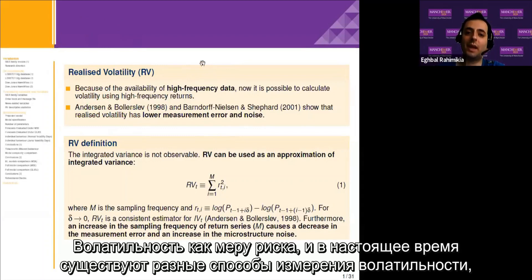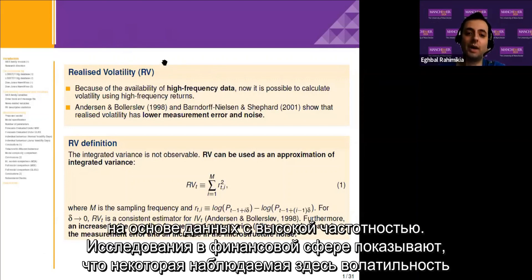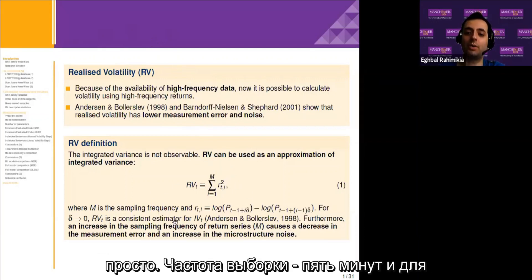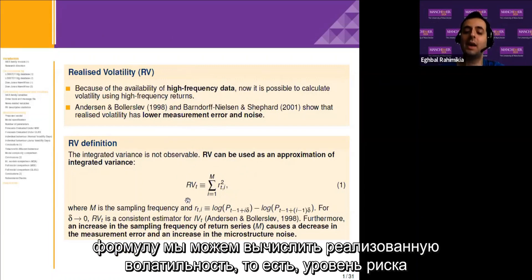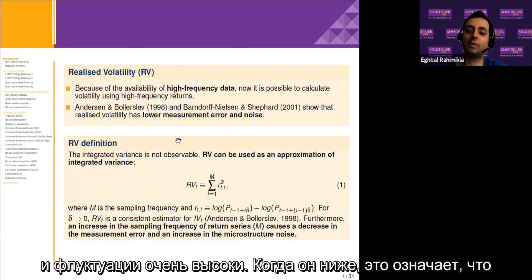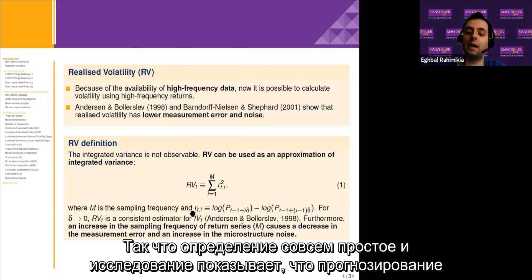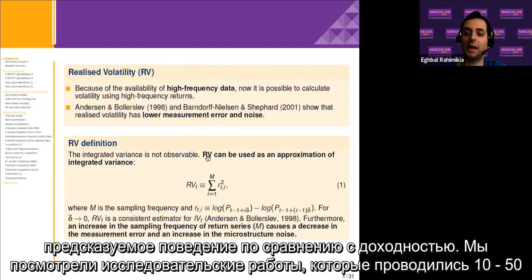As a simple description of volatility: volatility is a measure of risk, and there are different types of volatility. The latest one is realized volatility, which comes from high frequency data. Research in finance shows that this kind of volatility has lower measurement error and noise, and the calculation is quite simple. There is a sampling frequency like every five minutes, and for every five minutes we calculate the return. Using this formula we can calculate the realized volatility — it's a measure of risk in the market during a day. When it's high the market is volatile with high fluctuations; when it's lower, the fluctuations are lower.